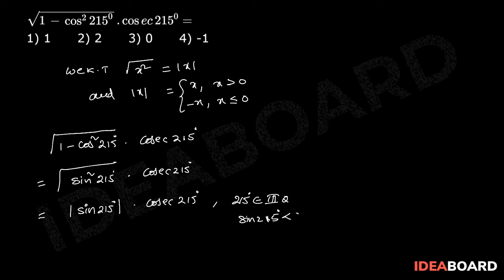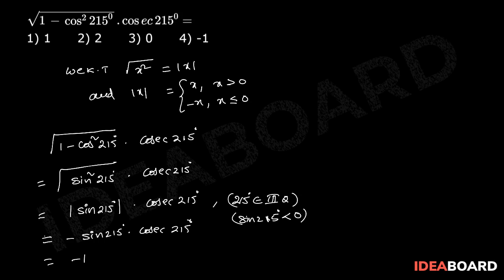Since sin 215° < 0, and |x| = -x when x < 0, we have -sin(215°) · csc(215°) = -1. So the correct answer is the fourth option.